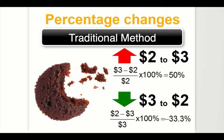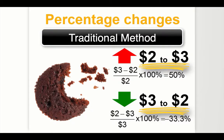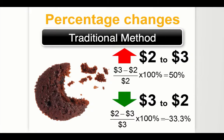the percentage change in price is 33%. In both cases, we are talking about a $1 difference over the same price range, $2 and $3, but we get different results for the percentage change.